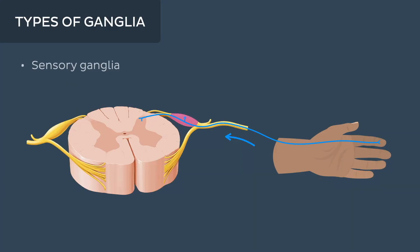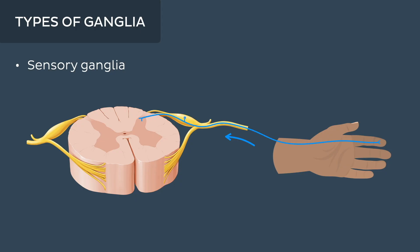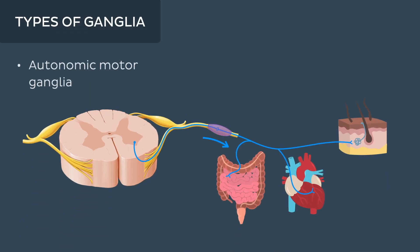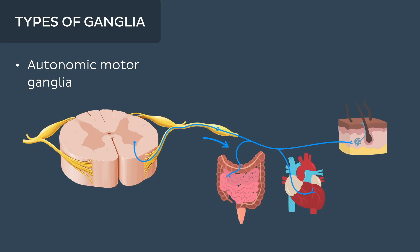The sensory ganglia, which is any type of ganglion sending sensory impulses from the peripheral nervous system to either the spinal cord or brain. And the autonomic motor ganglia, which is any type of ganglion sending involuntary motor movements to the viscera.